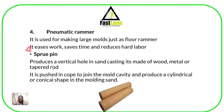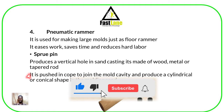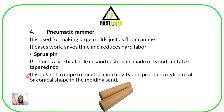Then we have another tool referred to as a sprue pin. A sprue pin basically produces a vertical hole in the sand casting. It is usually made of wood, though it can be metal or a tapered rod. It is pushed into the cope — the top part of the flask — in order to join the mold cavity and produce a cylindrical or conical shape in the molding sand.